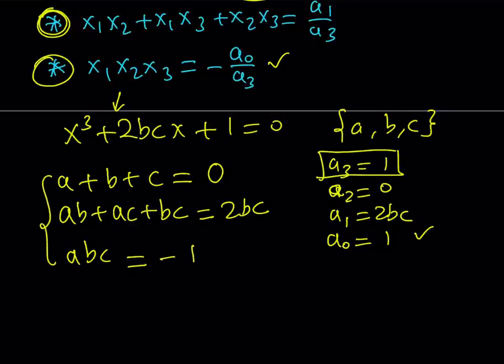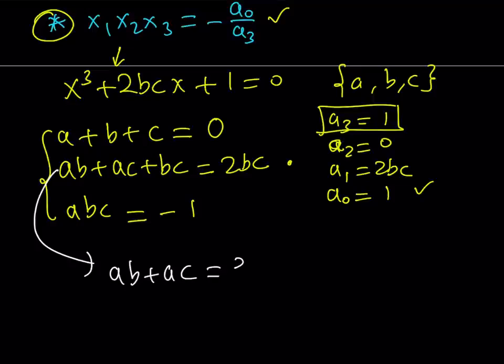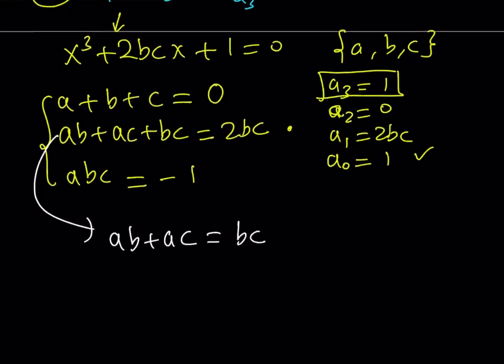So this is my system and I'm going to solve it. Starting with the second equation, I subtract bc from both sides: ab plus ac equals 2bc minus bc, which is bc. Factoring out a gives a times (b plus c) equals bc.